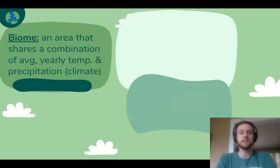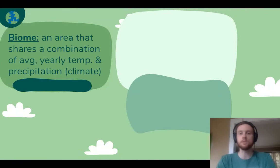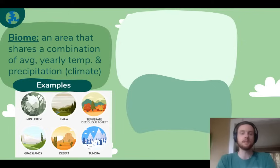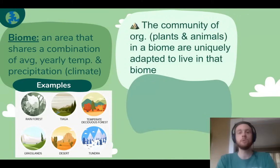Biomes are areas that share a combination of average yearly temperature and precipitation, also known as climate. Climate is just a combination of average temperature and precipitation trends over a year. So we can look at some examples of well-known biomes. The rainforest is going to have really high rainfall as well as really warm temperatures. Whereas the desert is going to be characterized by very low precipitation. That low precipitation is the big distinguisher between the tropical rainforest and the desert. The community of organisms that live in biomes are uniquely adapted to the climate of those biomes.